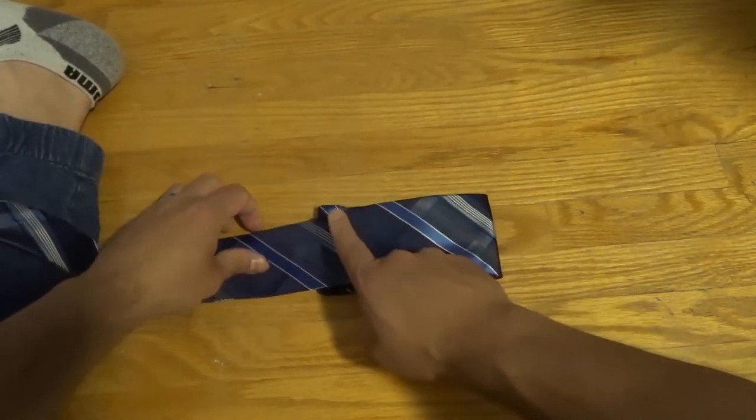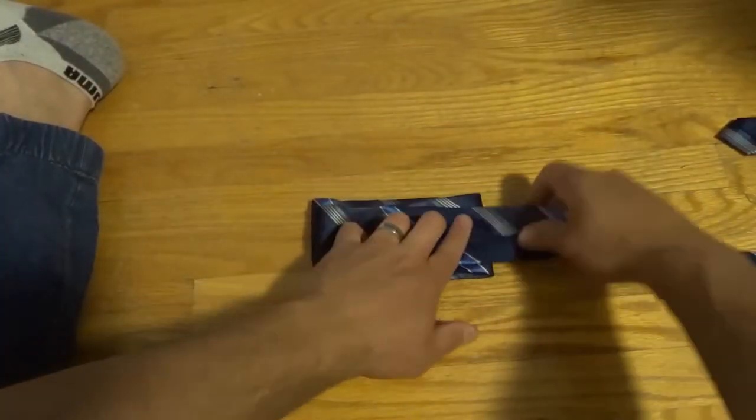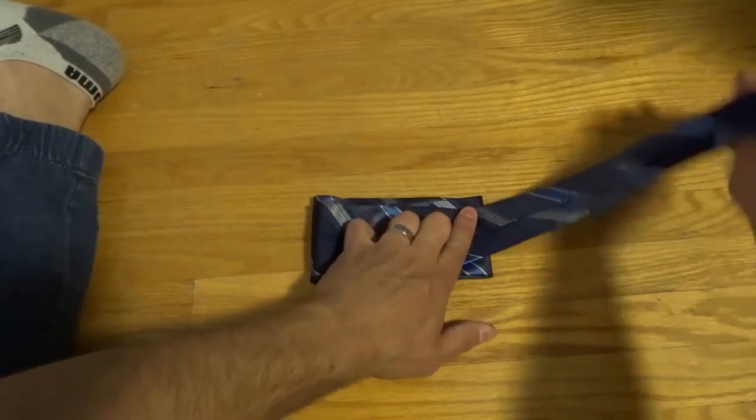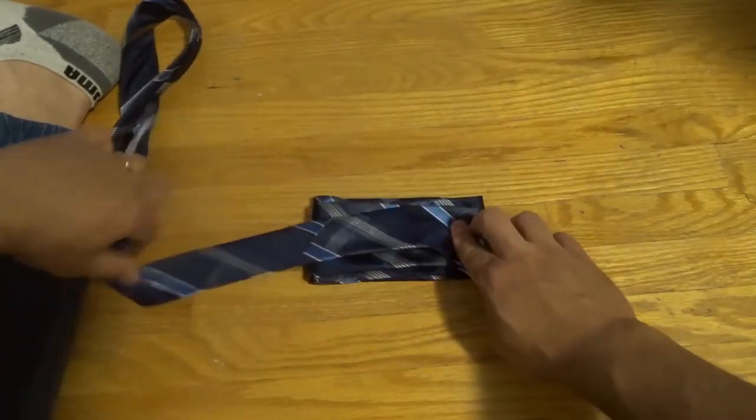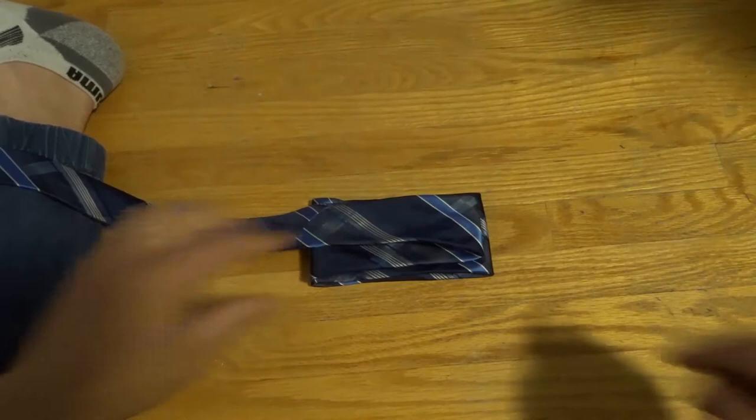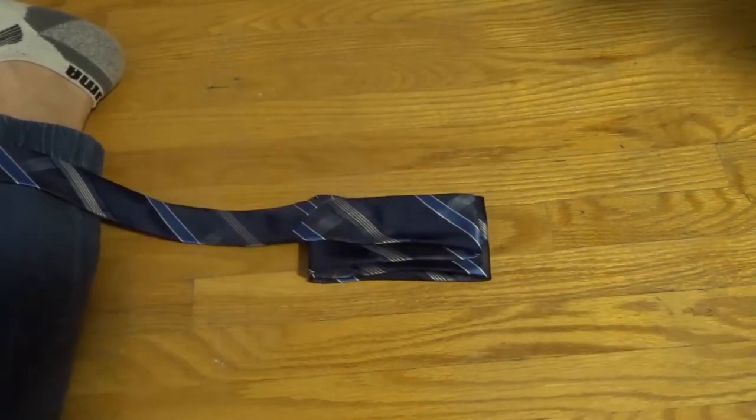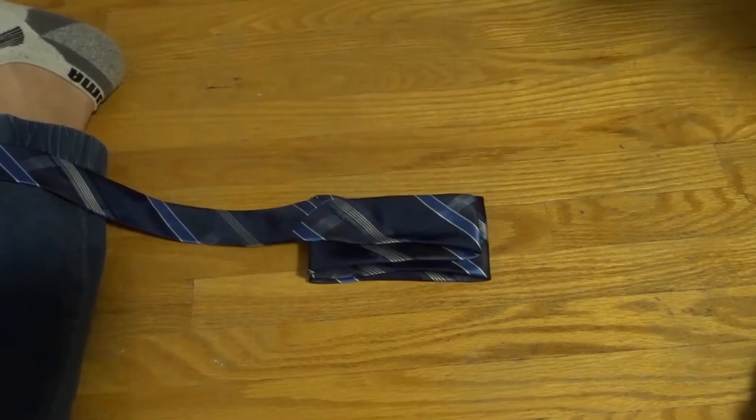Do the same thing the other way. This is the second fold. And then the same thing the other way. This is the third fold. So three times, just like that. You want to make sure that there's not anything sticking out over the sides of the front of the bow tie. This is the front of the bow tie that's touching the ground right now. So make sure that there's nothing sticking out from the sides.